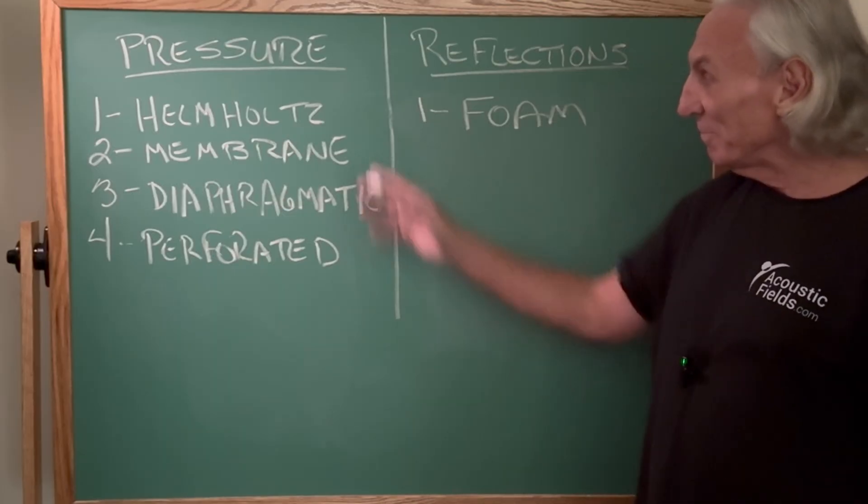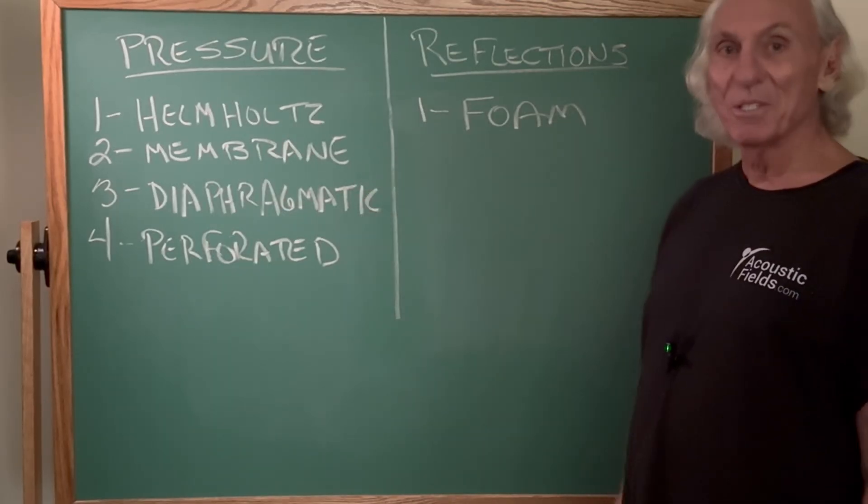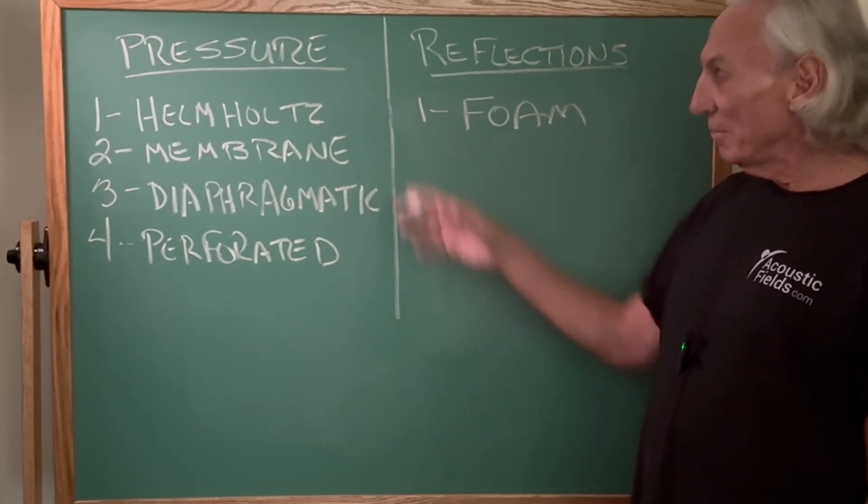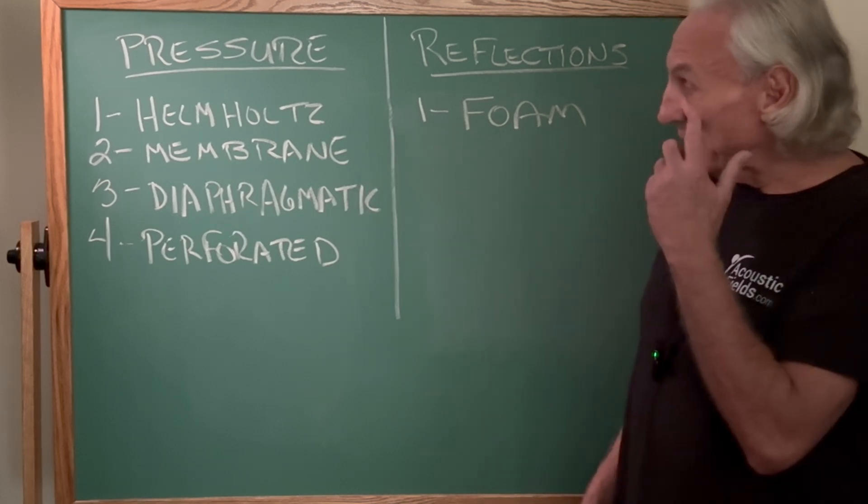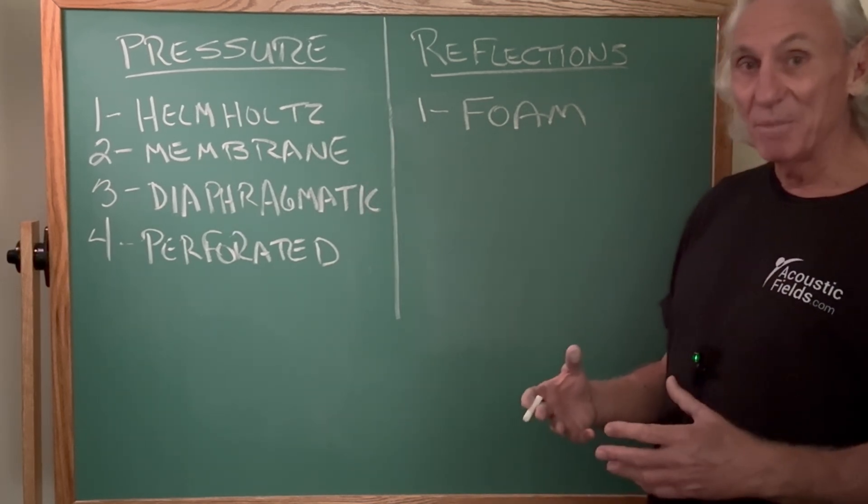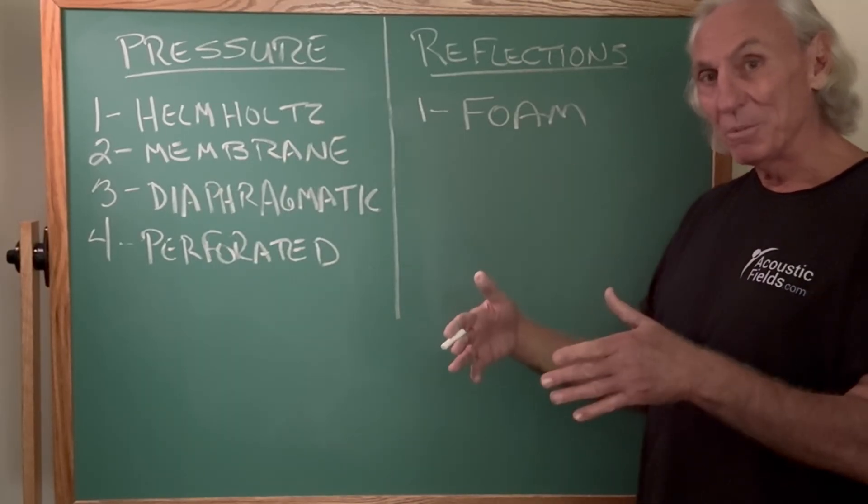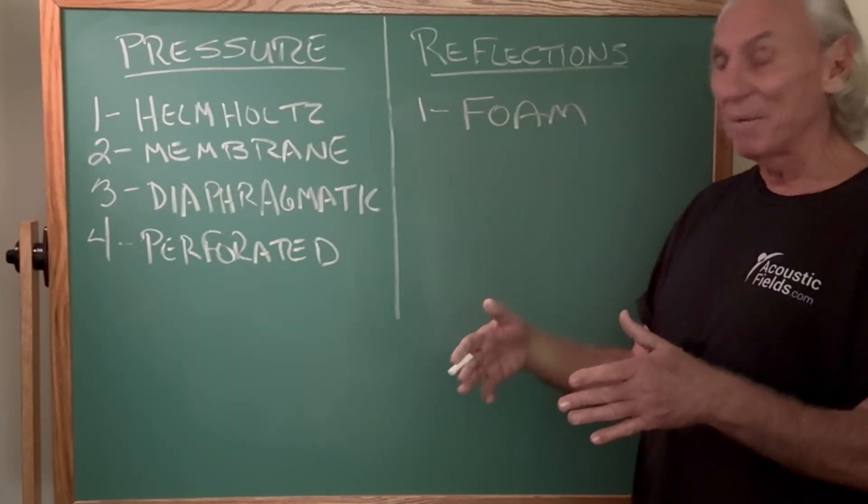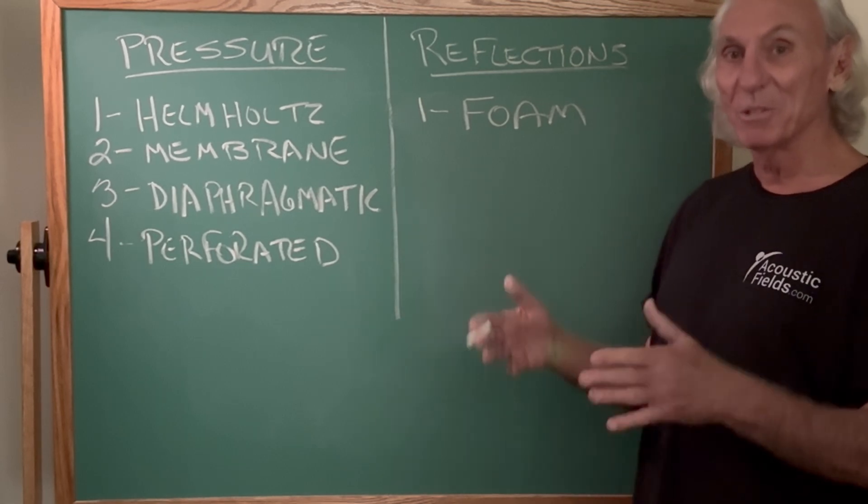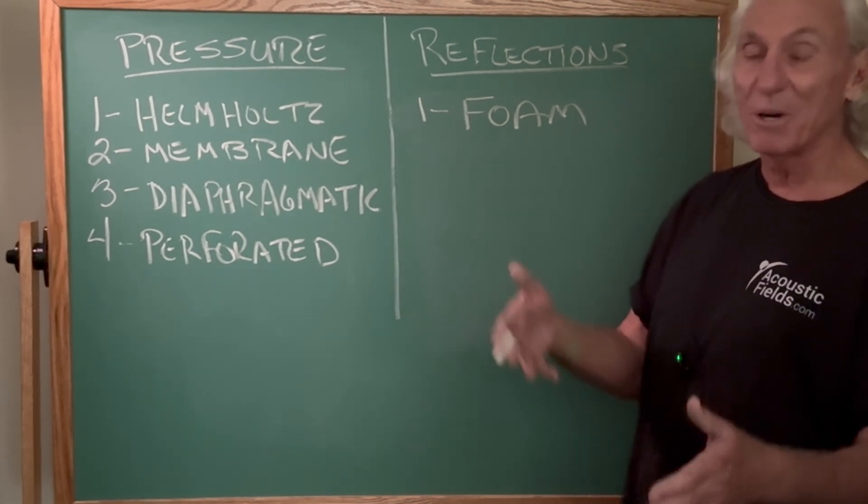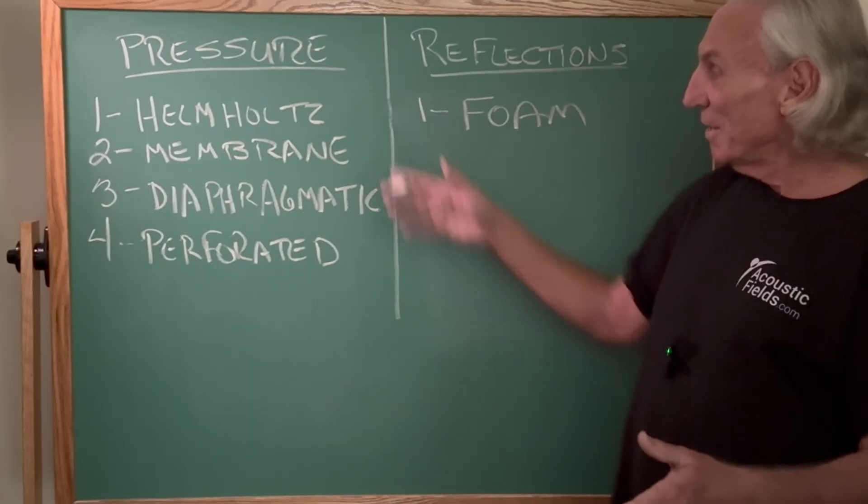Membranes, the cousin to diaphragmatic. If you look at the formulas for diaphragmatic, you see that the density of the cabinet, the depth of the cabinet, the density of the front wall, the fill material that you use inside the cabinet, these are all factors in contributing to the resonant frequency or how low the unit goes.